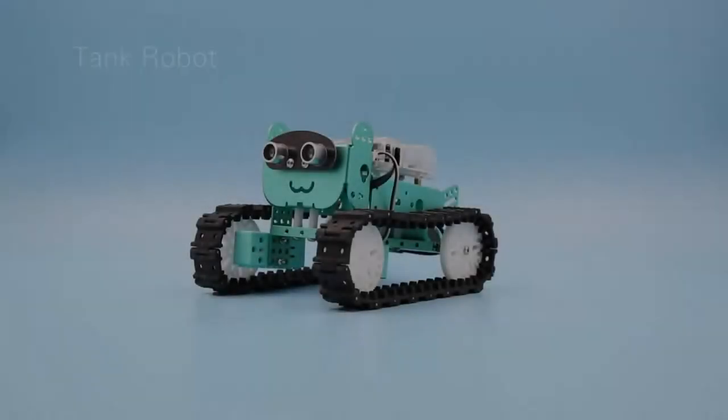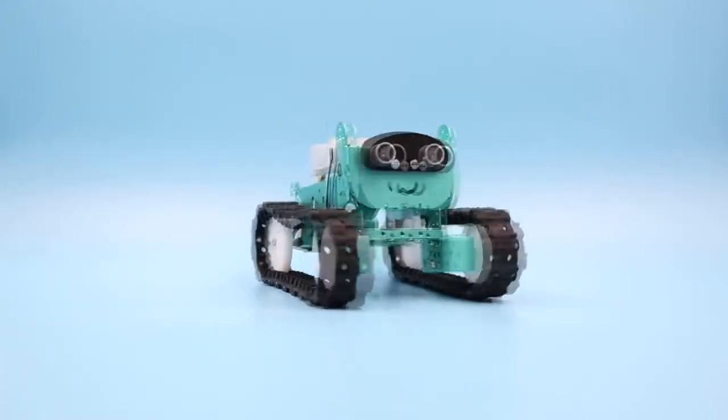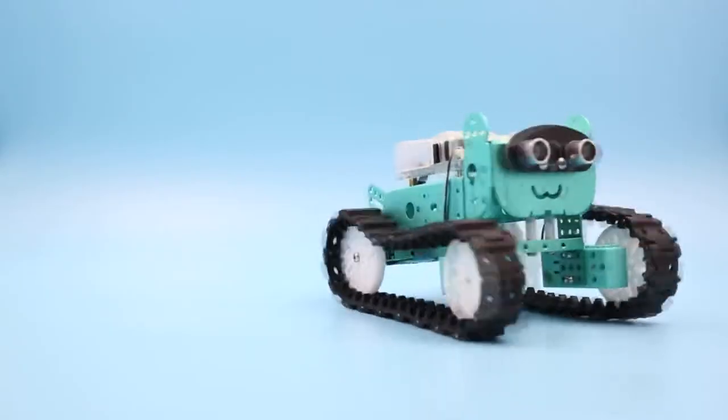With the accessories in package B, you can transform the Mio into an invulnerable mega-combat vehicle, which is called a tank robot.